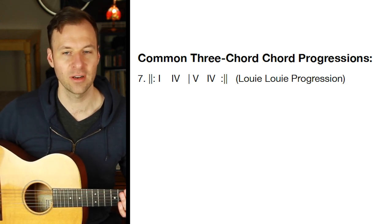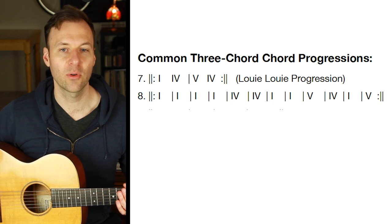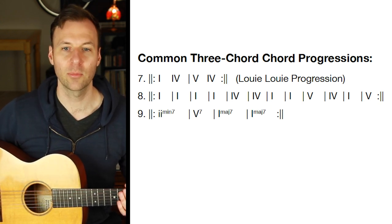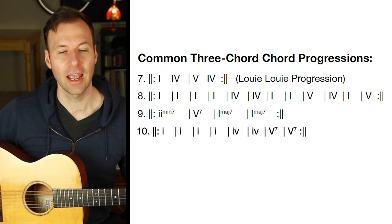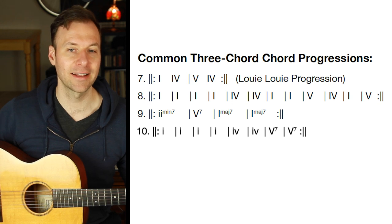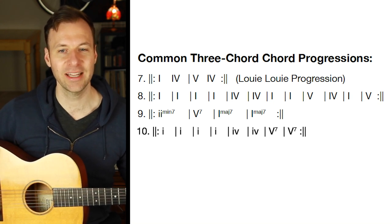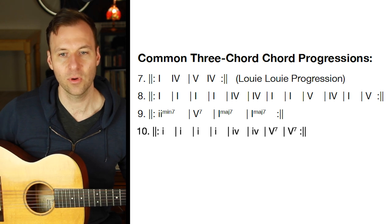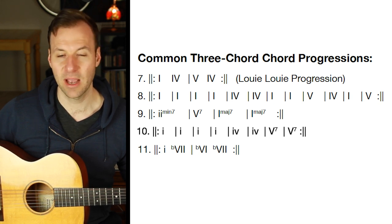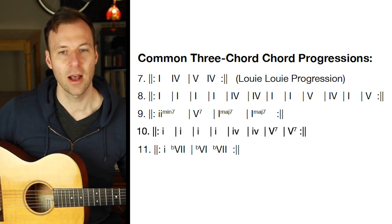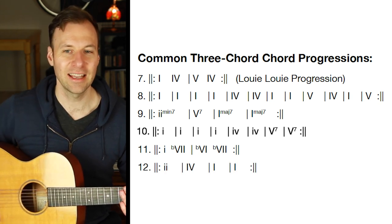Moving on to three-chord progressions: one-four-five-four, the Louie Louie or Wild Thing progression; the simple 12-bar blues; two-five-one, very common in functional harmony; and minor one, minor four, dominant seven five — used by Django Reinhardt in Minor Swing and Billie Eilish in Tough Guy. Then there's one, flat-seven major, flat-six major, back to flat-seven — the All Along the Watchtower progression.